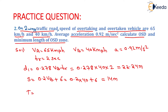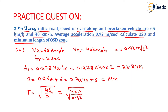Capital T will be equal to the square root of (4S / A). Here, the value of S is 14 and the value of A is 0.92. On solving this, we will get the value of capital T as 7.8 seconds.